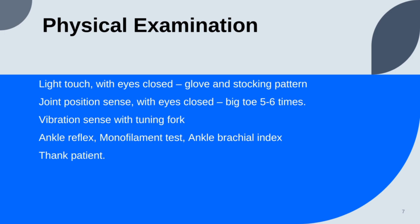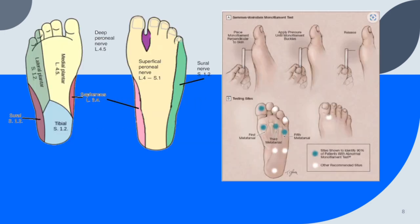Check vibration sense using a tuning fork, but if you don't have one, you can say you would like to do this. Then check the ankle reflex and ankle-brachial reflex. Then do a monofilament test on the plantar surface of the foot, and thank the patient. This diagram represents the various areas where you want to check light touch, checking the dermatomes of the foot, as well as how to perform the monofilament test.